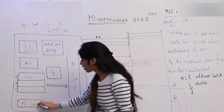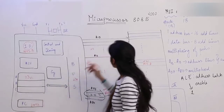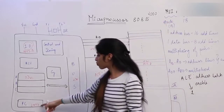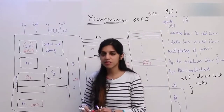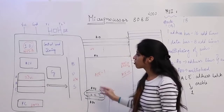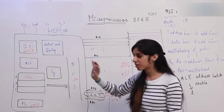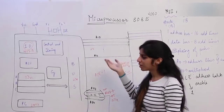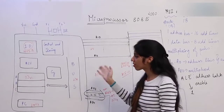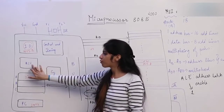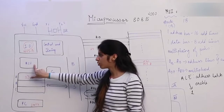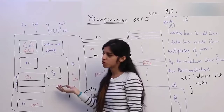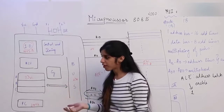PC then gets incremented again. Suppose some other instruction like ADD B or ADD C was stored next — it will be executed the same way. This is how any instruction is executed by the microprocessor. If it was an arithmetic operation, the ALU would be involved — the ALU would do the arithmetic operation, and if there is a carry, the carry bit would become 1 accordingly.